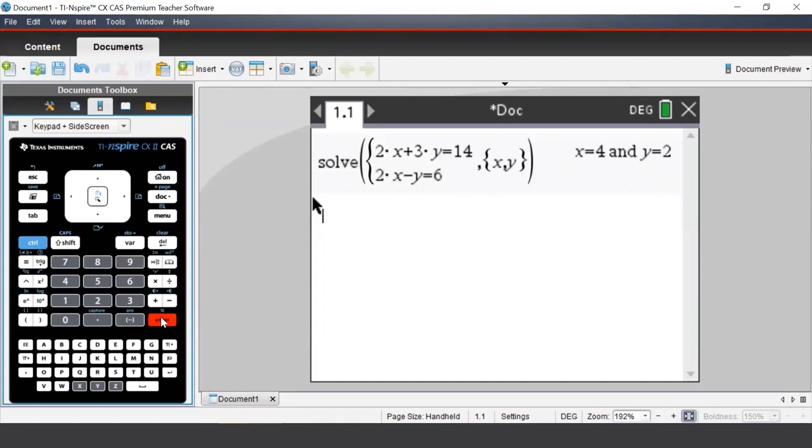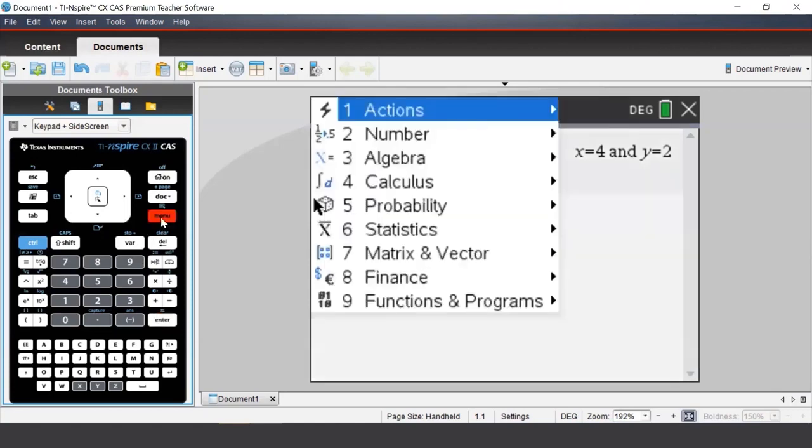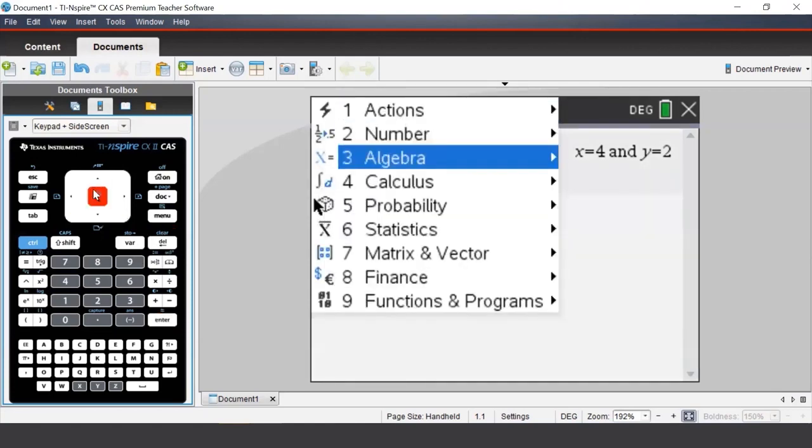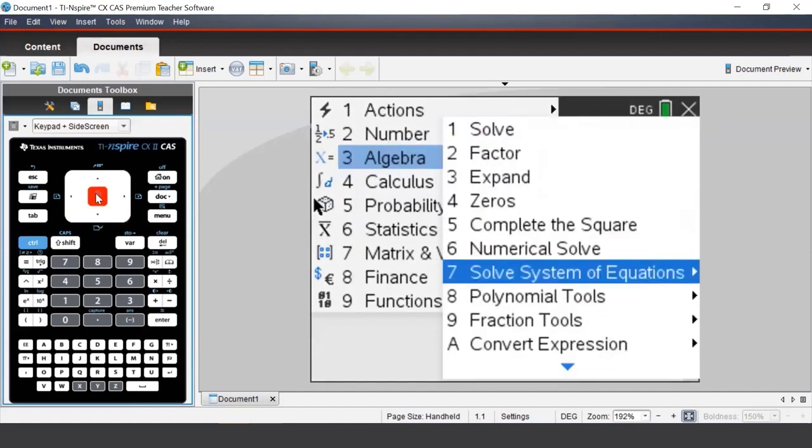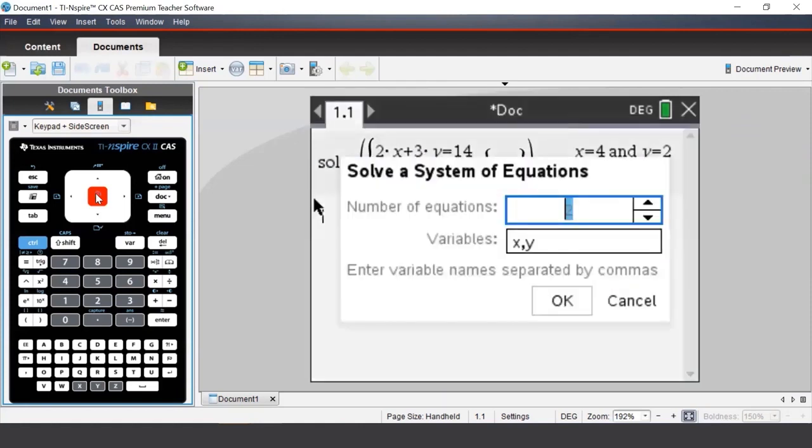Suppose we wish to solve for three variables. Again we can press menu and go to algebra and select solve system of equations and again the first option. To tell the TI INSPIRE that we would like three equations with three unknowns we must enter a 3 into the first field and then tab down to the next field. The TI INSPIRE will automatically update with three variables.